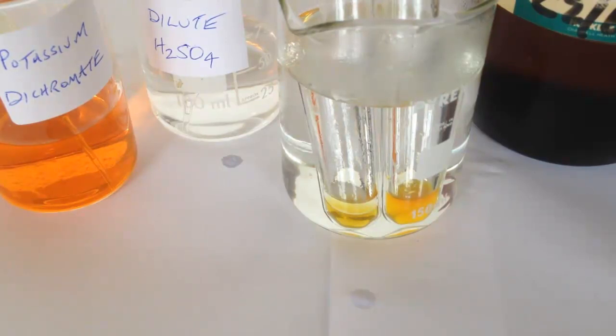So take a look at the test tubes. The test tube on the left has butanal mixed with acidified potassium dichromate. Watch how it changes in colour from orange to green. You can already see signs of it turning from orange to green here.